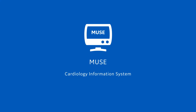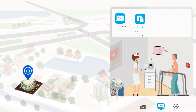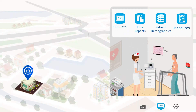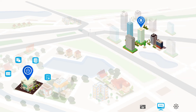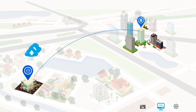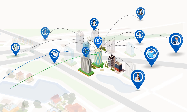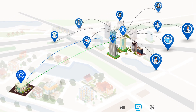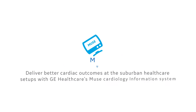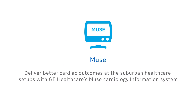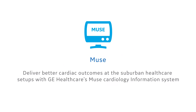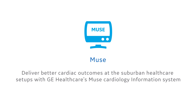The Muse Cardiology Information System securely provides access to cardiac setup regarding patient-related data by allowing transmission of raw ECG data, stress reports, patient demographics, and measurements. A single Muse system can be accessed across the facilities of your hub and spoke model enterprise network by thousands of users. Deliver better cardiac outcomes at suburban healthcare setups with GE Healthcare's Muse Cardiology Information System.